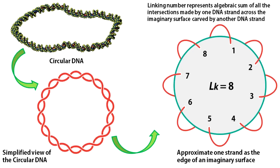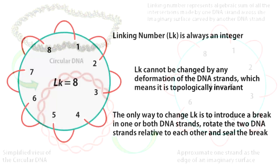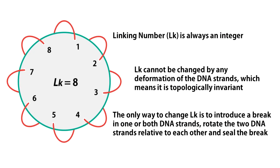The fundamental topological parameter of a closed circular DNA is called the linking number. Assume that one DNA strand is the edge of an imaginary surface and count the number of times the other strand crosses this surface — the algebraic sum of all intersections is the linking number. First, linking number is always an integer. Second, linking number cannot be changed by any deformation of the DNA strands, meaning it is topologically invariant. The only way to change linking number is to introduce a break in one or both DNA strands, rotate the two strands relative to each other, and then reseal the break. This is exactly what DNA topoisomerase enzymes do.